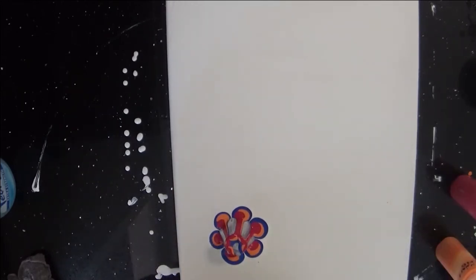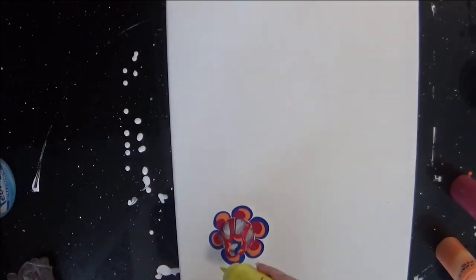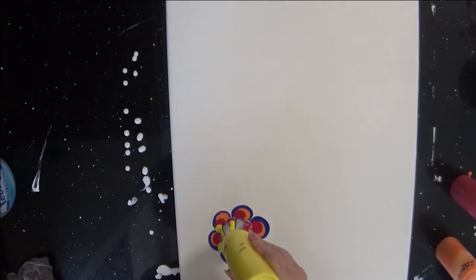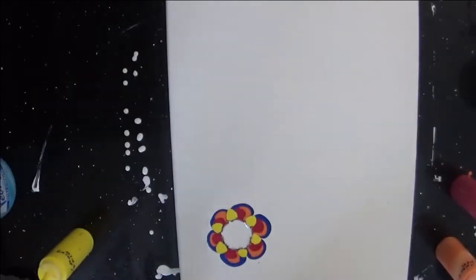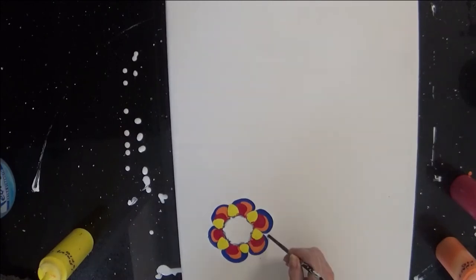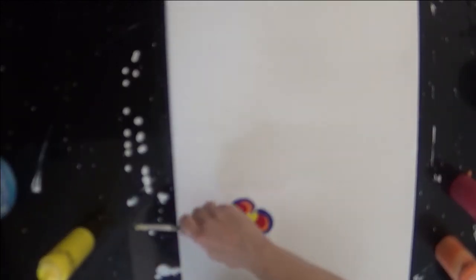For the center, I'm going to add a little yellow. I'm going to use the end of a paint brush and bring it through. Get rid of my air bubbles.